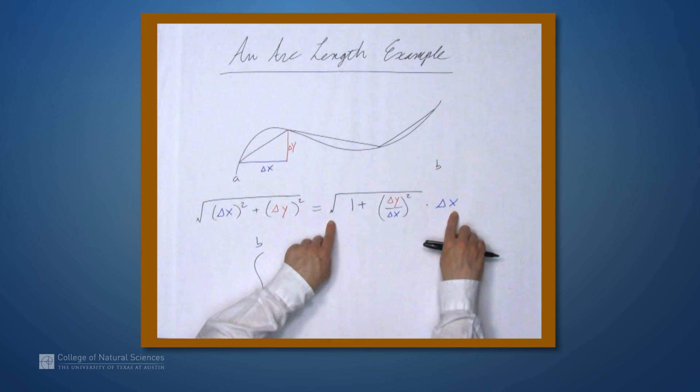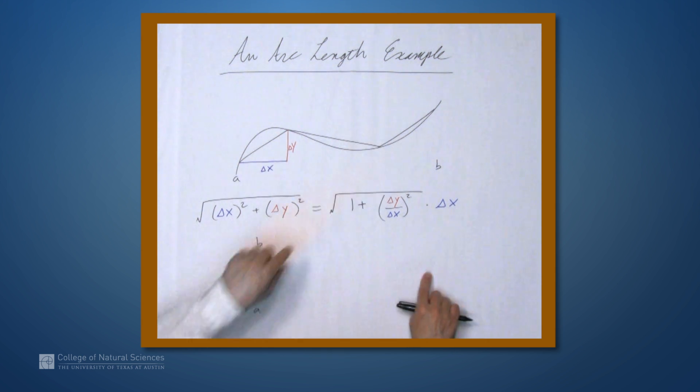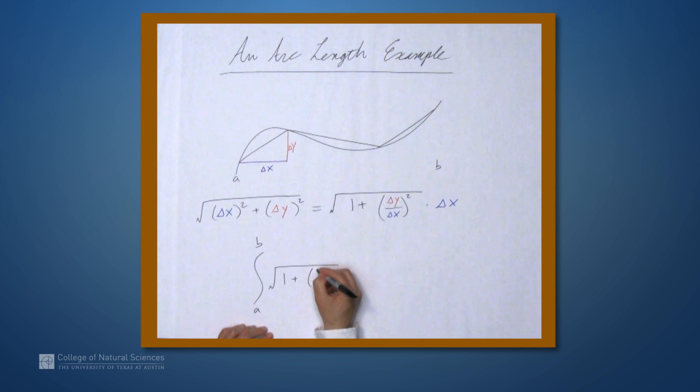We're going to have one of these expressions for each of these things, so that becomes our integrand with d's instead of Δ's. So the square root of 1 plus dy dx squared dx.